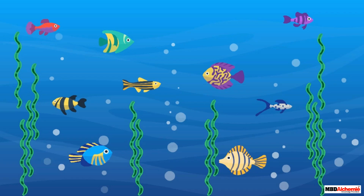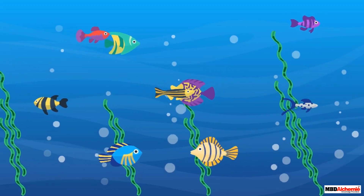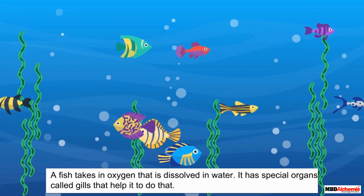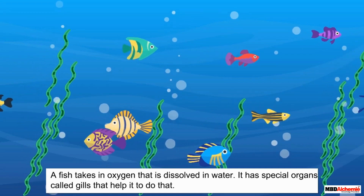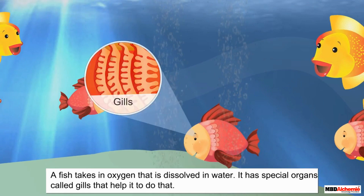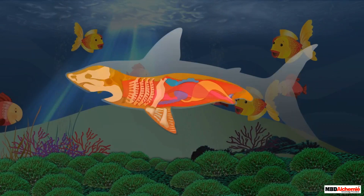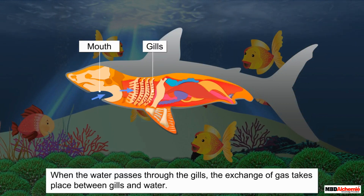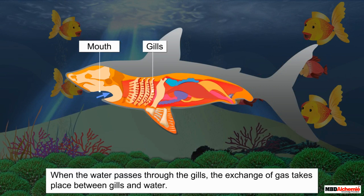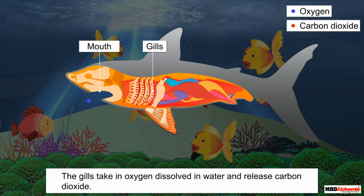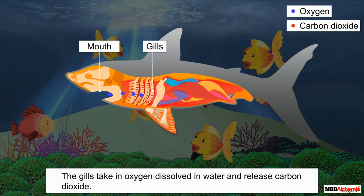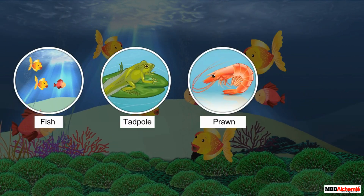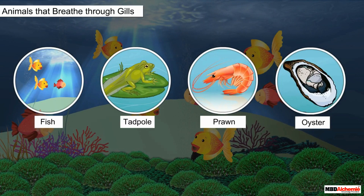Let us look at the breathing organs in aquatic animals. A fish lives in water, so it has to take in oxygen that is dissolved in water. It has special organs called gills that help it do that. Water enters inside the body of the fish through its mouth, and when this water passes through the gills, gas exchange takes place. The gills take in oxygen dissolved in water and release carbon dioxide. Like fish, tadpoles, prawns, and oysters also breathe through gills.